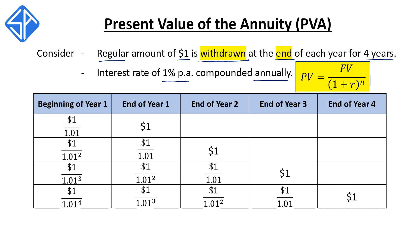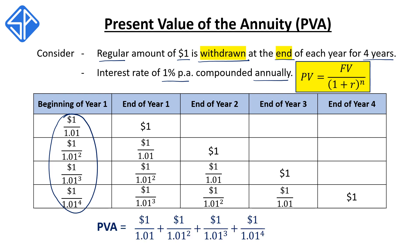So when we talk about the present value of the annuity, we refer to the total amount that we need to put in at the beginning of the investment period so that we can have a regular payout — in this case, a regular payout of $1 at the end of each year. So for this example, the present value of the annuity is the summation of those terms: $1 divided by 1.01, plus $1 divided by 1.01 squared, plus $1 divided by 1.01 cubed, plus $1 divided by 1.01 to the four. This gives us $3.9020, which means we only need to deposit slightly less than $4 to achieve this return.